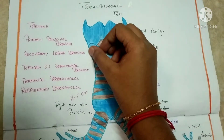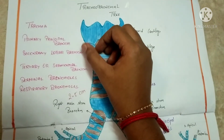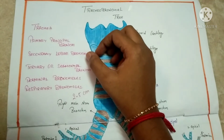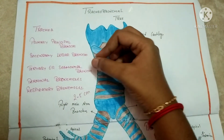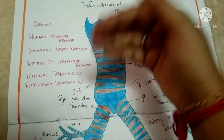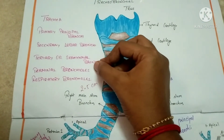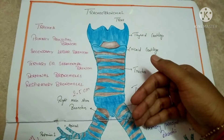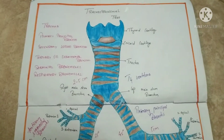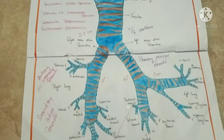Then it divides into secondary lobar bronchi — three on the right and two on the left — one for each lobe. Then into tertiary or segmental bronchi, one branch for each bronchopulmonary segment. These then divide into terminal bronchioles and further into respiratory bronchioles. This is the tracheobronchial tree, and I hope you all understood it.